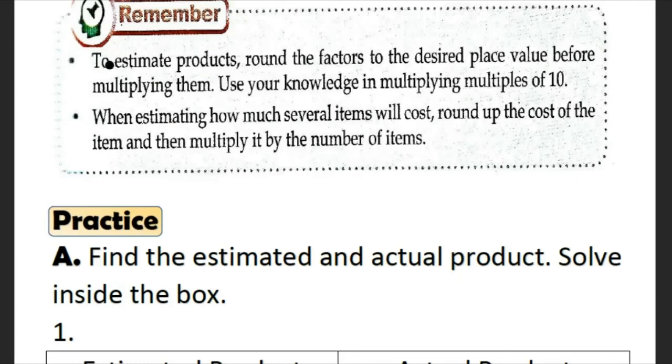Let's remember to estimate products: round the factors to the desired place value before multiplying them. Use your knowledge in multiplying multiples of 10. When estimating how much several items will cost, round up the cost of the item and then multiply it by number of items.